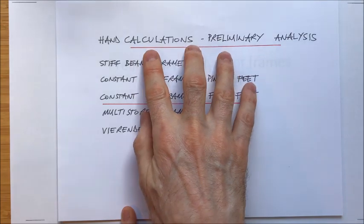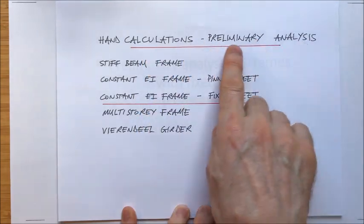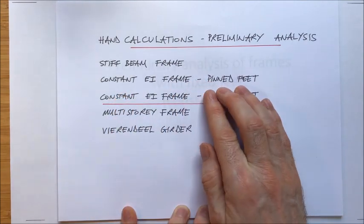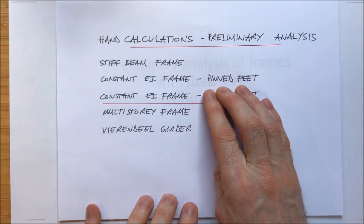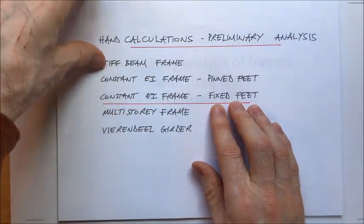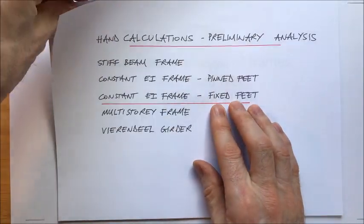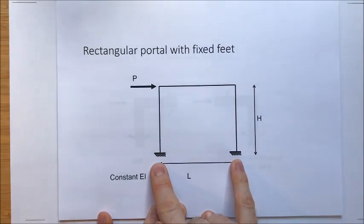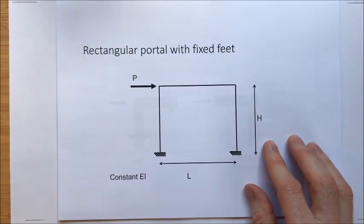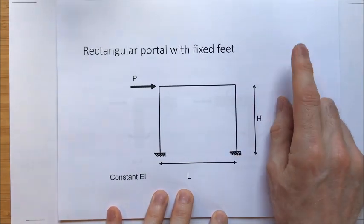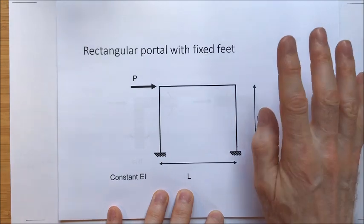Previously we've looked at preliminary analysis hand calcs for a stiff beam frame and for a frame with constant EI and with pinned feet — just a single storey frame. This time we're going to look at a frame with constant EI, similarly stiff members, but this time it has fixed feet. This is a rectangular portal, and the approach is very similar to the frame with pinned feet. The key difference is the way that the columns behave.